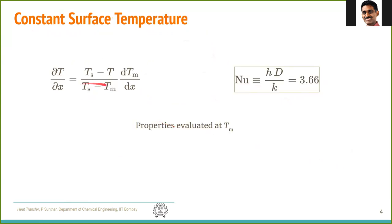For these Nusselt number results, all properties must be evaluated at the mean (bulk) temperature of the fluid in the pipe. There is no film temperature here because in the fully developed region the boundary layer extends to the full radius of the pipe.